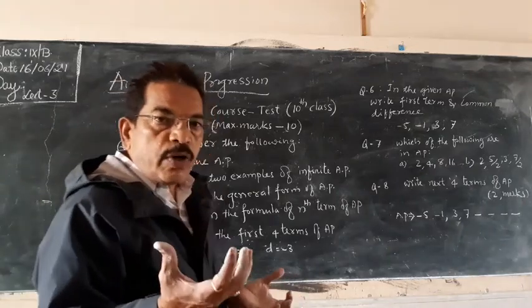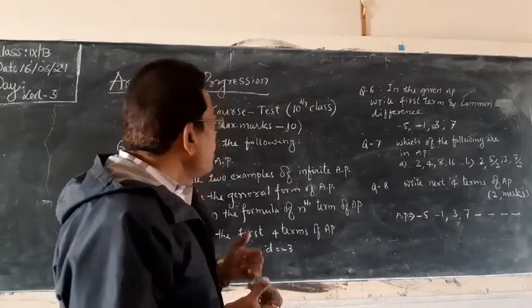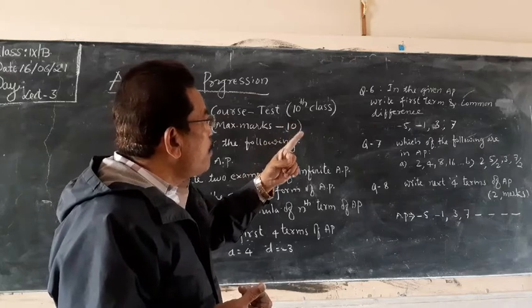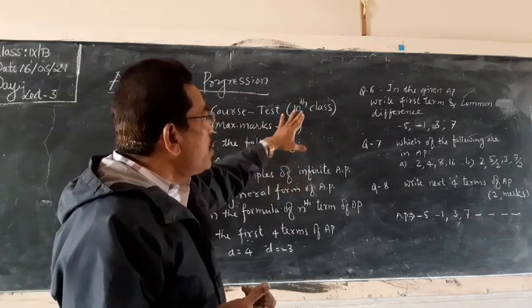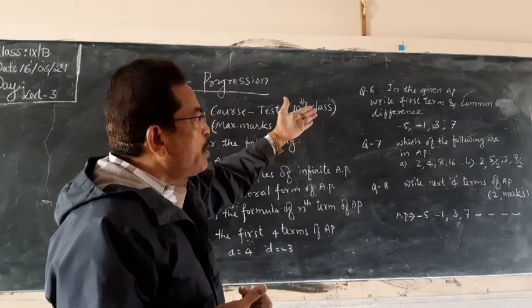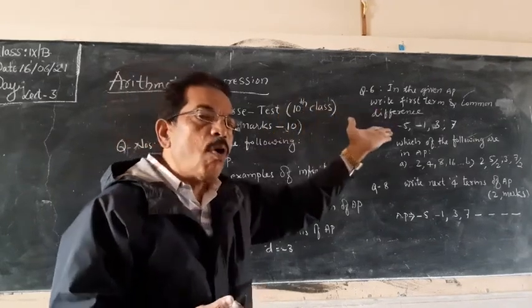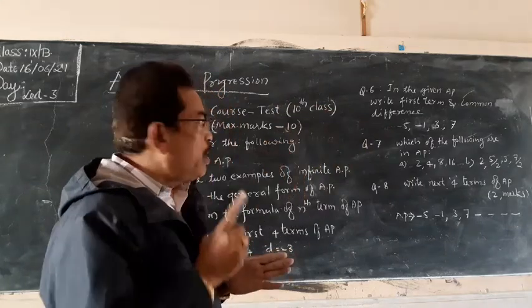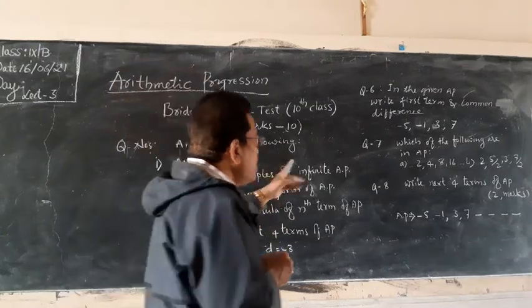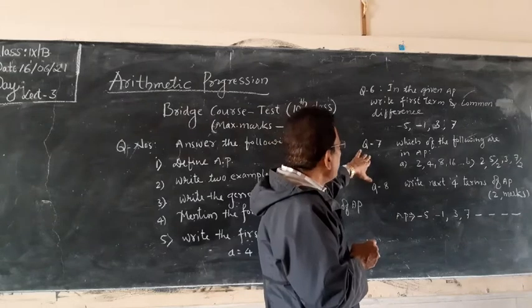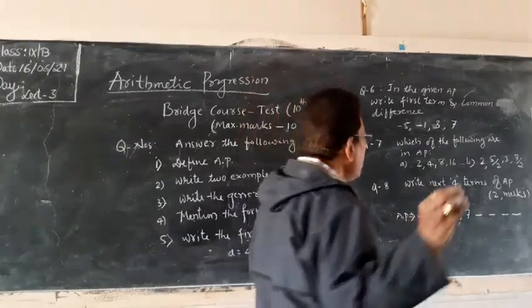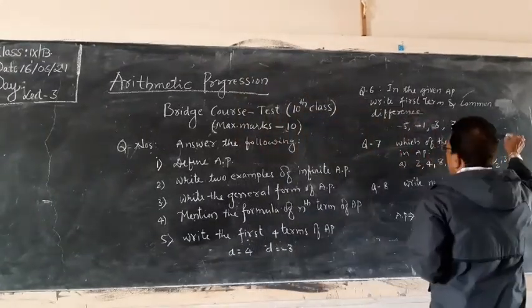In the given AP, write the first term and common difference. Which one is the first term? Which is the common difference? You have to find everything. Then, which of the following are in AP? Questions 7 and 8 carry two marks each.